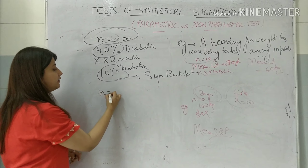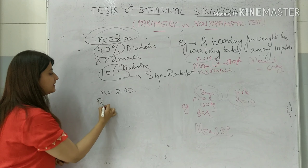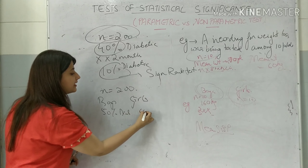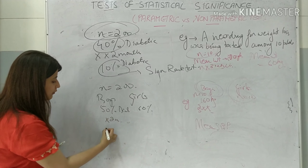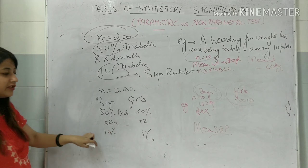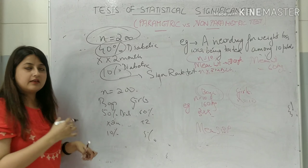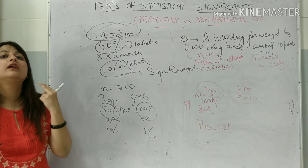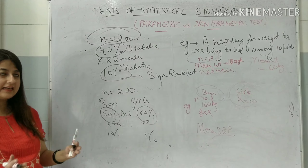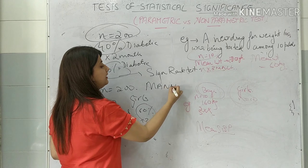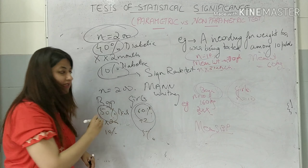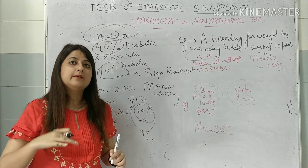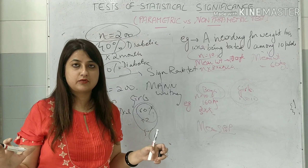Now suppose the same question involves N=200 with two groups — males and females. In males 50% are diabetic, in females 60% are diabetic. I give a drug for two months; afterwards 10% remain in males and 5% in females. Which test will I use? Since I am comparing percentages and proportions, it automatically becomes a non-parametric test. And since I am doing it for two groups, it will be the counterpart of unpaired T-test — the Mann-Whitney U test. Also, since you are dealing with proportions and percentages, you can also use chi-square test as a test of association, which we will discuss in the next video.